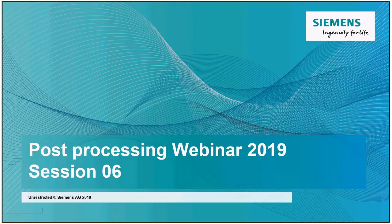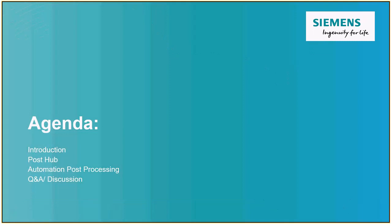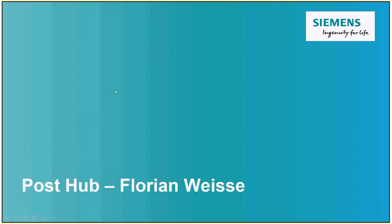Good morning, good afternoon, welcome to webinar session number six in 2019. Today we have two topics: Florian Weisse from product management will show us the status of PostHub and what we currently do, and after that we'll talk about automation in post-processing and how it works with NX Open API, the possibilities you can achieve and which advantages you can get.